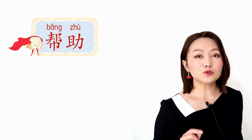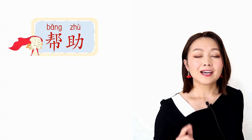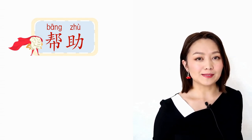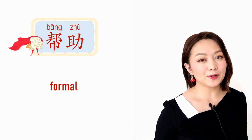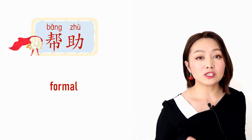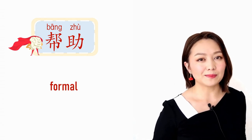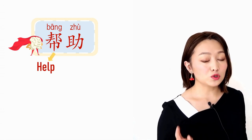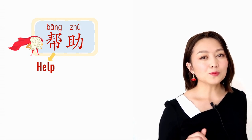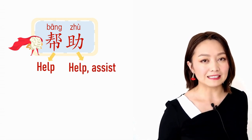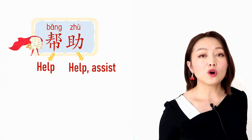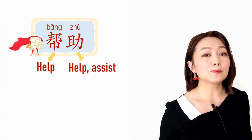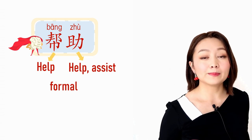Now let's look at 帮助. Compared with 帮, 帮助 is more formal. If we dig deeper, this word is made up by two concepts: 帮 means 'help,' and 助 also means 'help' and 'assistant.' So they come together to form a new word that is more formal and more serious.